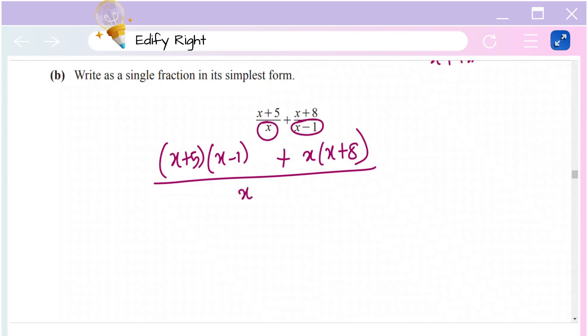In the denominator, just multiply the two given denominators: x(x - 1). Now open the brackets. You get x² - x + 5x + x² + 8x over x(x - 1).